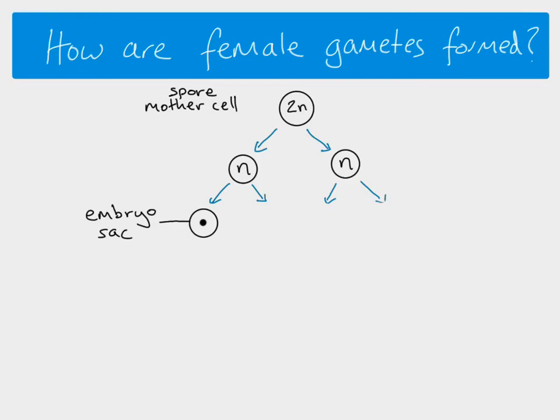Now this embryo sac gets bigger and also divides by mitosis. We end up with an embryo sac which is much larger and has two haploid nuclei inside it. This is still a haploid cell. Each of these is haploid. That's the first mitosis, or first mitotic division.